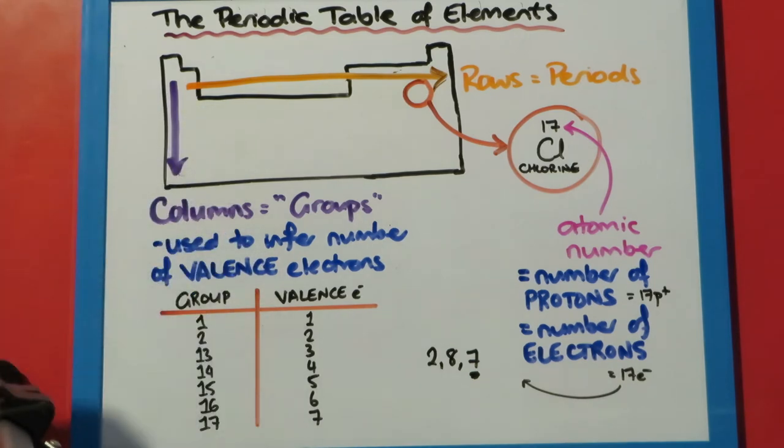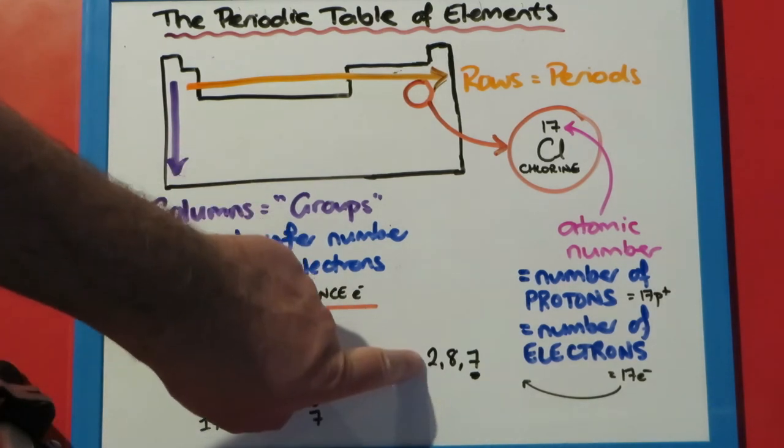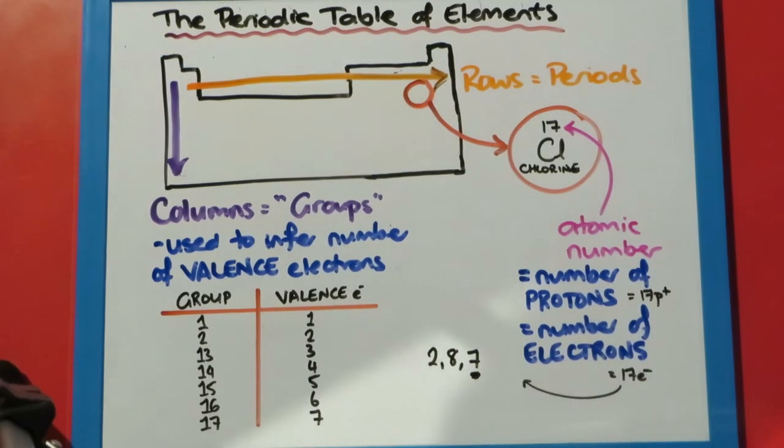The periods tell us how many electron shells or energy levels the electrons are arranged into. So if something is in the third period, it's going to have its electrons arranged in three electron shells: two in the first, eight in the second, and up to eight in the third.